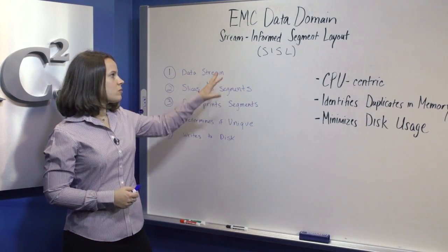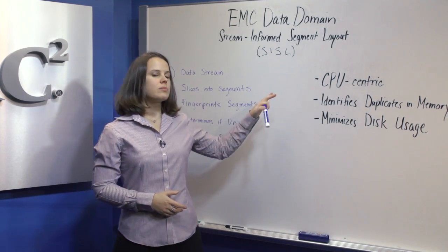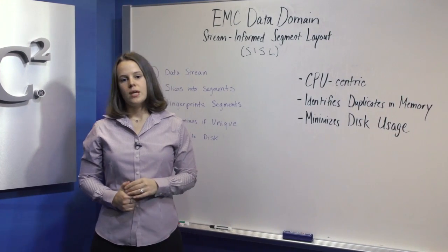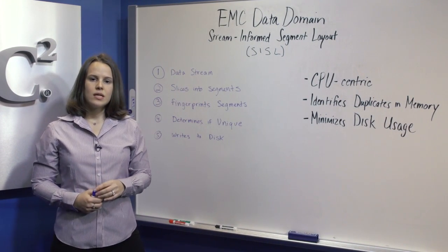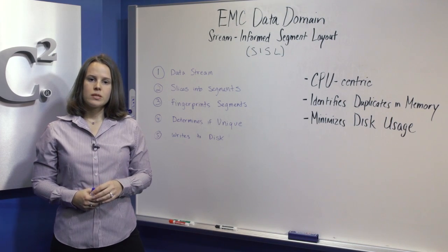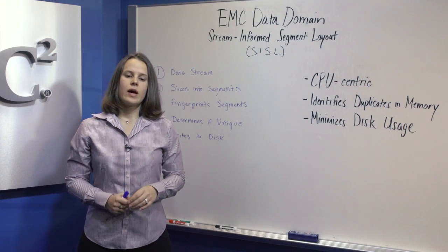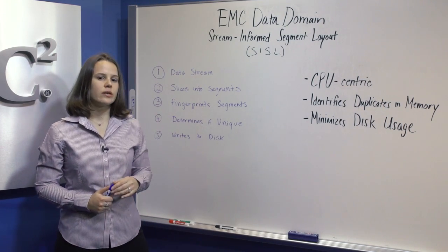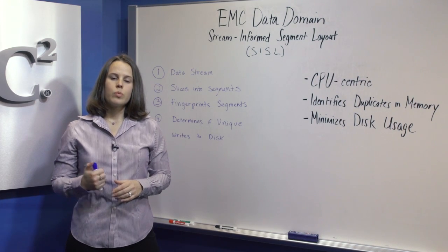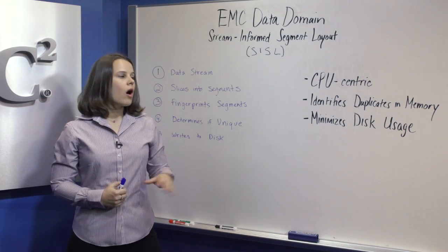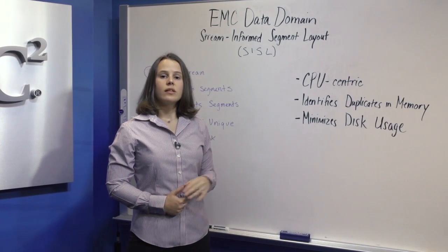To summarize, we've seen that the Data Domain SISL architecture is CPU-centric, not spindle bound, which means that in-line deduplication throughput speeds can continue to leverage increased enhancements in CPU performance. Every time Intel gets faster, Data Domain systems get faster. In addition, SISL identifies 99% of duplicate data within memory. All of this combines to minimize disk usage and deliver high throughput.